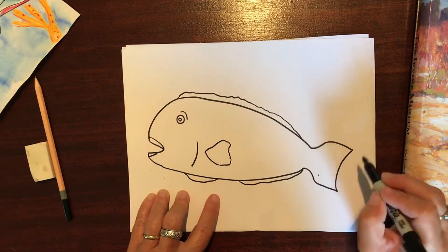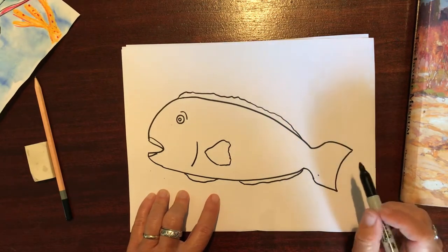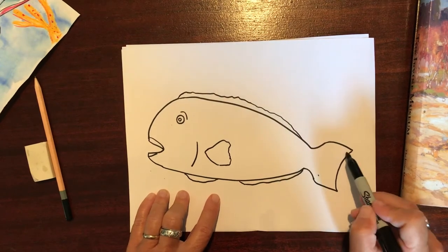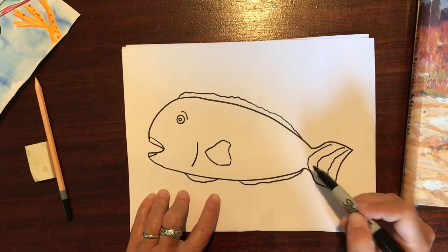If you're going to choose to do the parrotfish this week, you need to add a lot of scales and stripes and things to add all those brilliant bright colors. So what I like to do is put a few curved lines here on the tail like this.